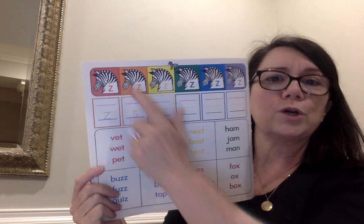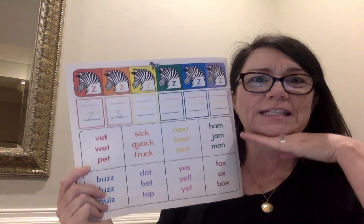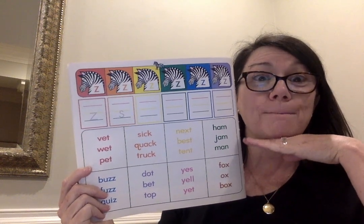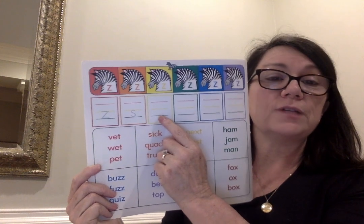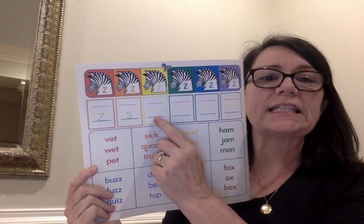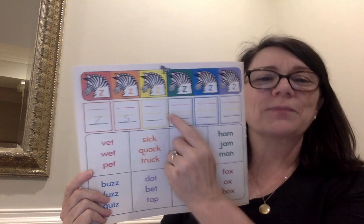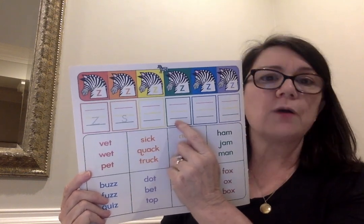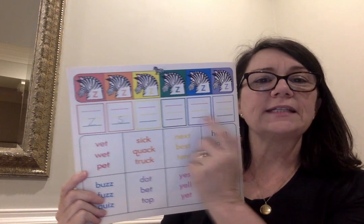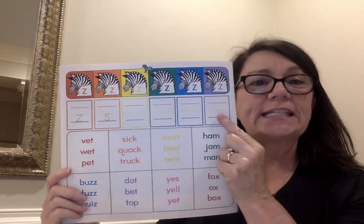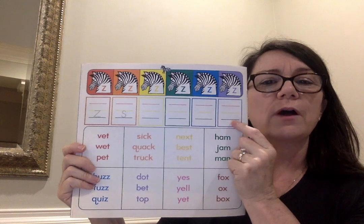Moving over to the orange zebra — the word is sailboat. That's a two-syllable word, and also a compound word: sail and boat. So we're going to write S there for sail. The yellow zebra is sun — S. The green zebra is zillion — Z, zillion. Moving over to the blue — the word is socks, S, lowercase S. Now we're moving over to the purple zebra, and it's sink — S. So S for sink.